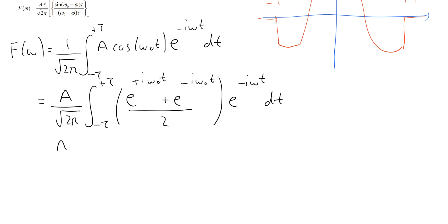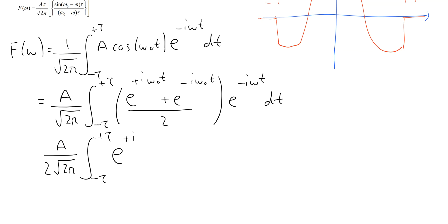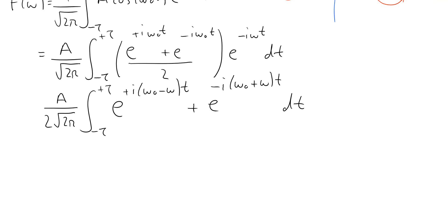We multiply out the brackets, bringing the factor of 2 outside to give a divided by 2 times the square root of 2 pi. The integral runs between minus tau and plus tau. The first term is the product of e to the plus i omega-0 t times e to the minus i omega t, which we write as e to the plus i times (omega-0 minus omega) t. The second term becomes e to the minus i times (omega-0 plus omega) t, using the rule that the product of two exponentials is a single exponential with arguments summed.